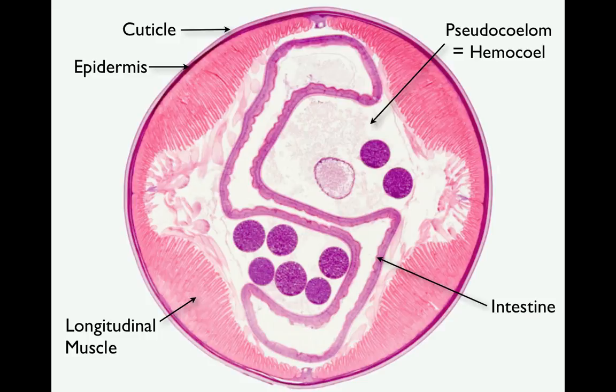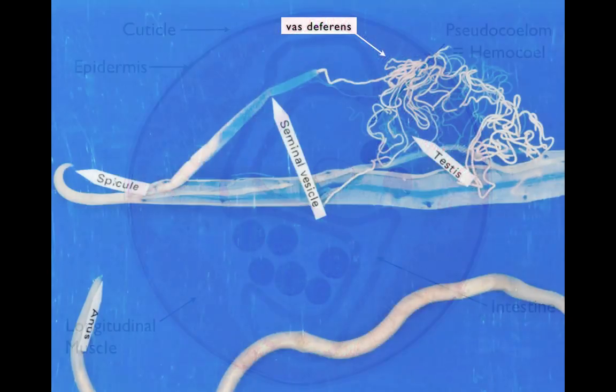The other structures that you can see - these dark purple structures here and here, as well as this lighter structure here - are all part of the male reproductive system. To better understand what you are looking at, let's take a look at a dissected specimen of Ascaris. This is available to you in the laboratory.